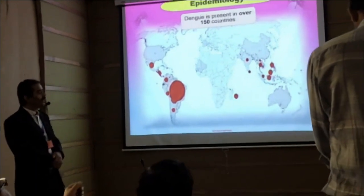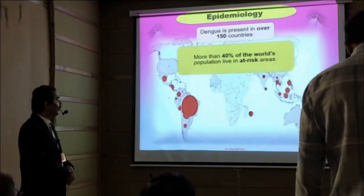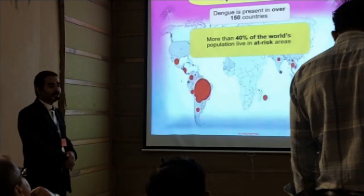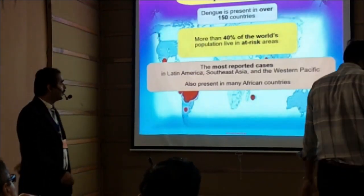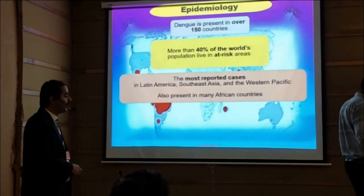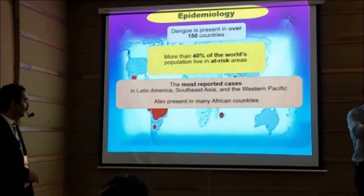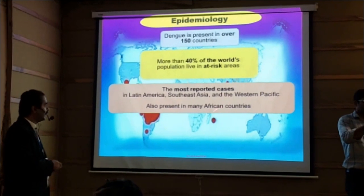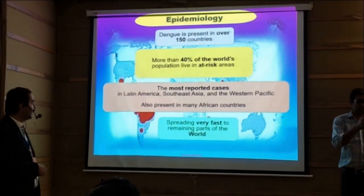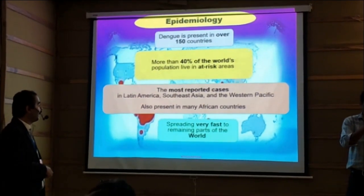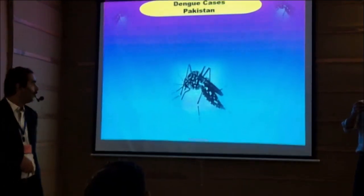Epidemiology: Dengue is present in over 150 countries, and more than 40% of the world's population is at risk. The most reported cases are in Latin America, South East Asia, and the Western Pacific areas. Cases are also present in some African countries, and this virus is very closely spreading to the remaining parts of the world.